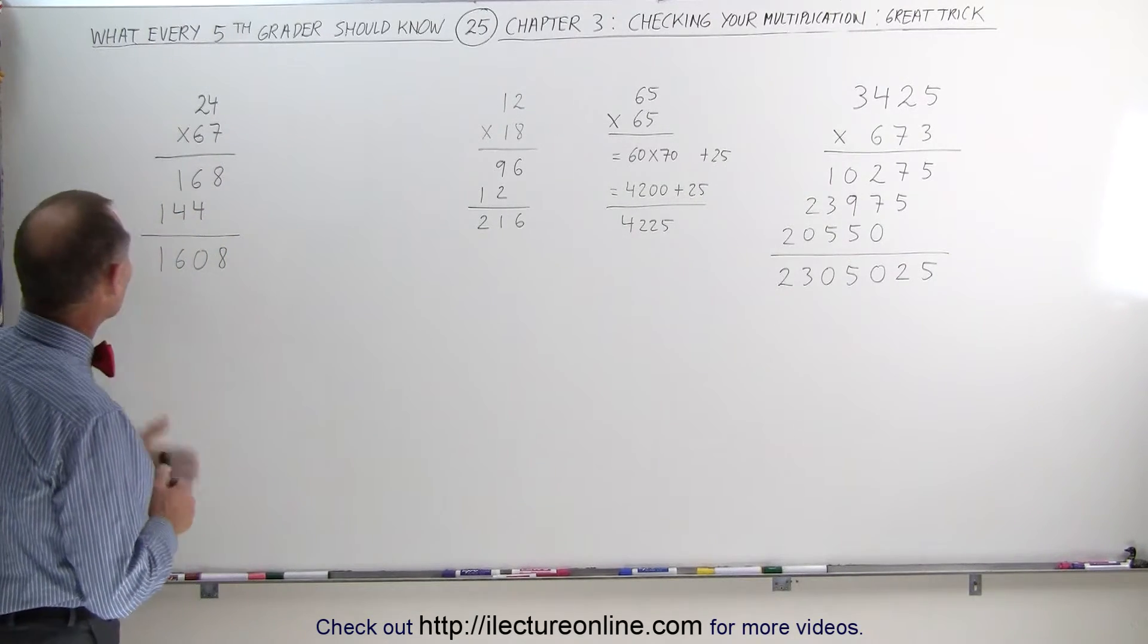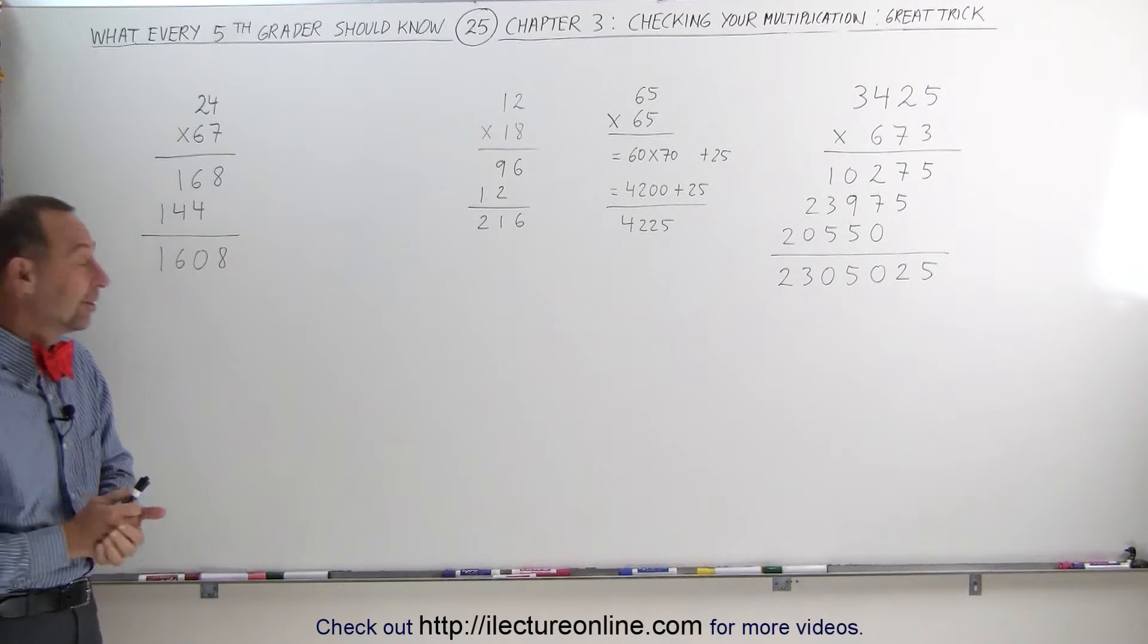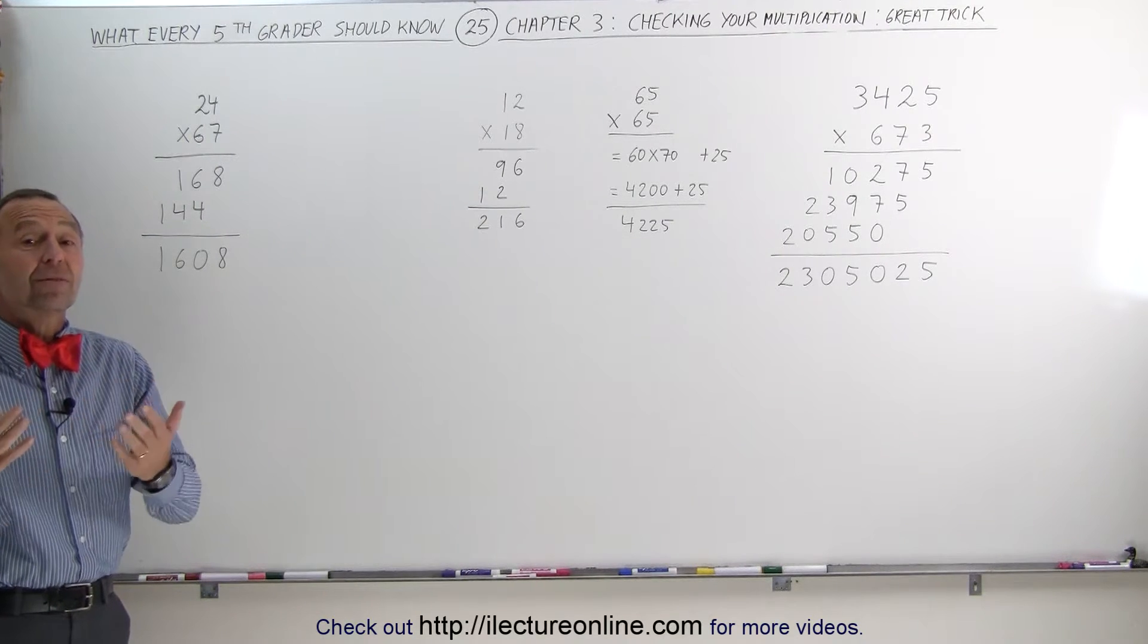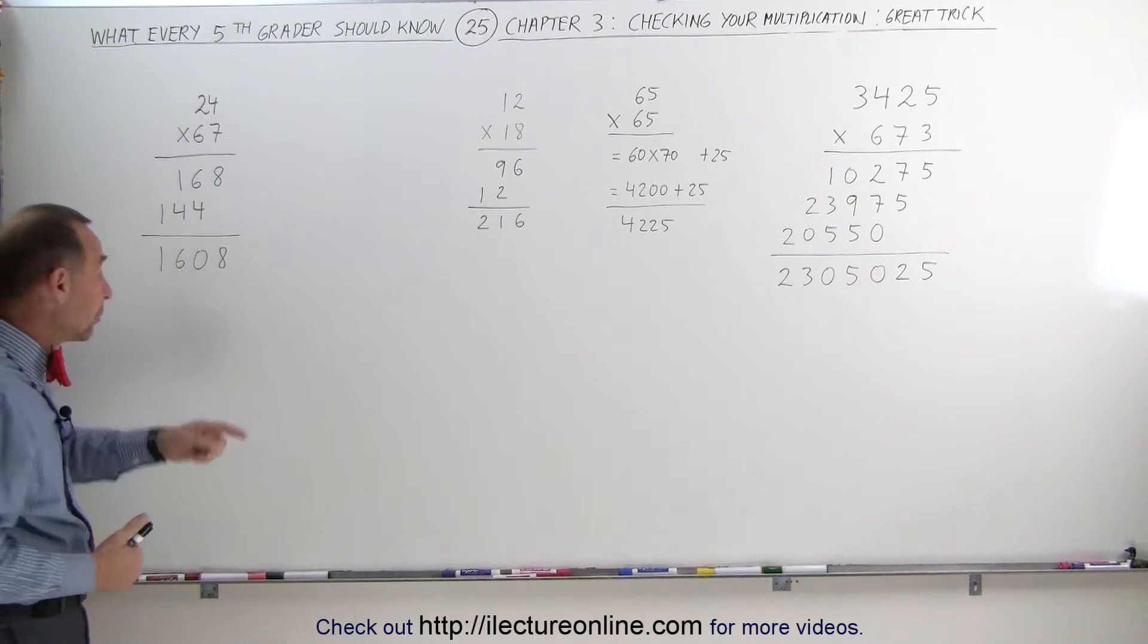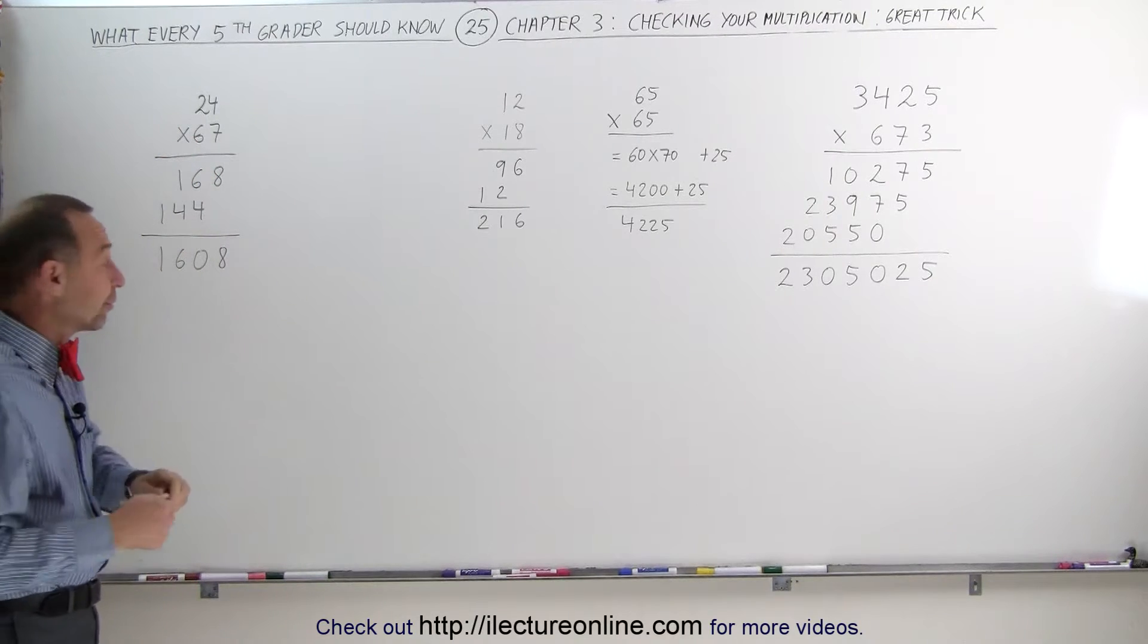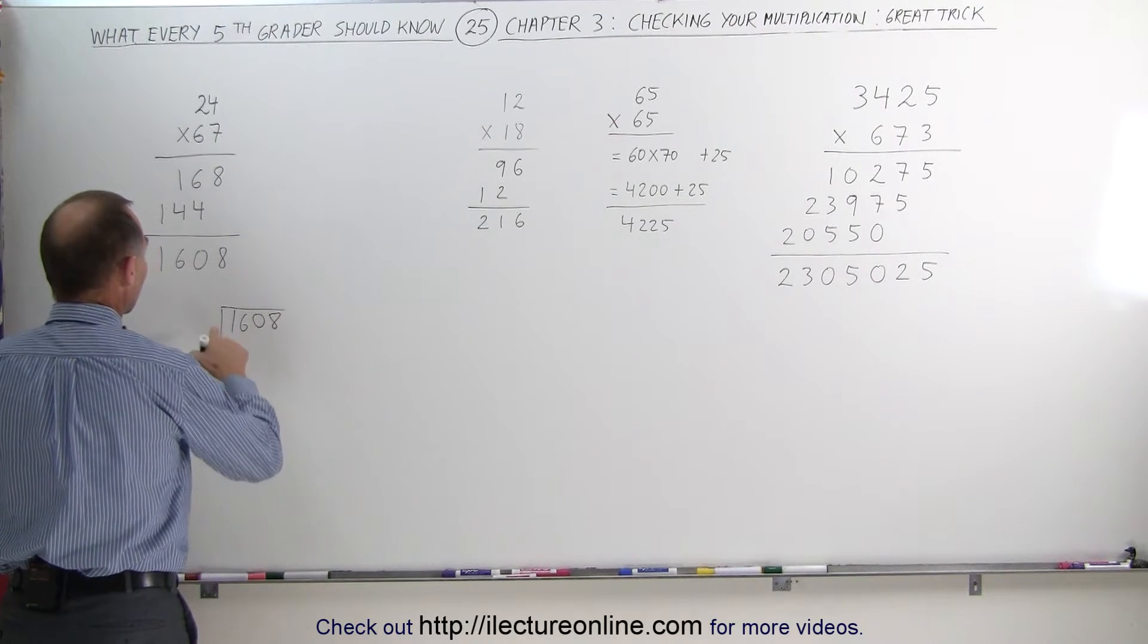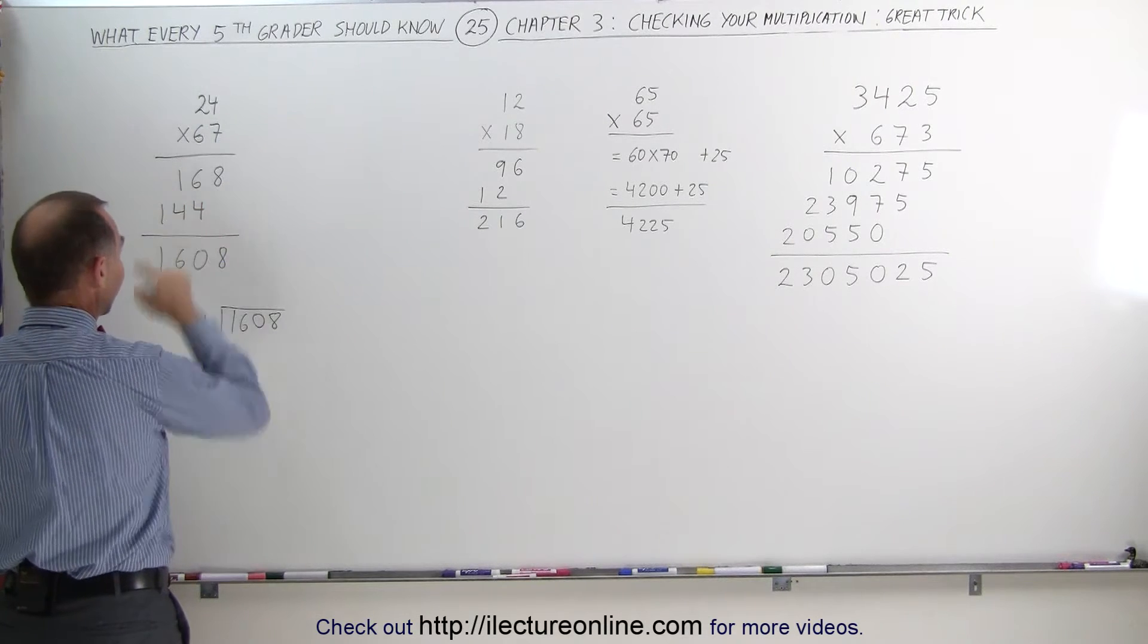Let's say we have the multiplication 24 times 67 and we got the result of 1,608. The question is, is that correct? If you're going to check it, just like my wife refused to check it when she was a young girl, in school they would reverse the problem, they would take the result, divide it by one of these two numbers and get the other number. For example, they would take the number 1,608, which is the result of the multiplication, and then they would try to divide it by the number 24 to see if they would get 67.